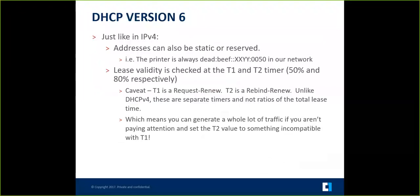DHCP version 6 also has timers — T1 and T2 — but how those timers work is different. One is a request-and-renew, and one is a rebind-and-renew, and unlike DHCP v4 they're separate timers. If you want to experiment in a lab, set up a DHCP v6 environment with about 10 hosts, set your T2 timer lower than your T1, and watch what happens. Take some packet captures — self-inflicted DHCP multicast storms are kind of cool.